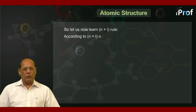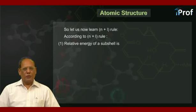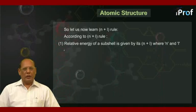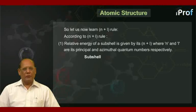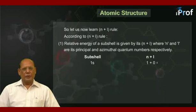According to n plus l rule, number one, relative energy of a subshell is given by its n plus l, where n and l are its principal and azimuthal quantum numbers respectively. Therefore, for the subshell 1s, n plus l is equal to 1 plus 0, that's equal to 1.